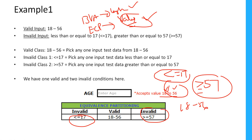Valid input is 18 to 56. Invalid input is less than or equal to 17, and greater than or equal to 57. These are all invalid inputs.